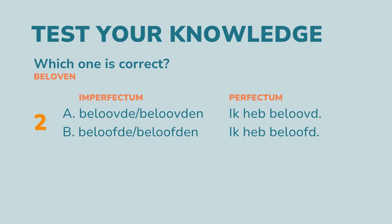Question 2: Which one is correct for 'beloven,' meaning 'to promise'? A: beloofde, beloofden, and ik heb beloofd. Or B: beloofde, beloofden, and ik heb beloofd. It's B. The infinitive minus -en ends with a v, so you need to work with the d. But the stem is 'beloofd' with an f.